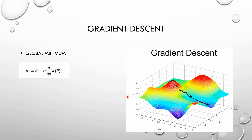The gradient descent algorithm is an iterative algorithm to find a global minimum of an objective function. This algorithm is widely used in machine learning for minimization of functions. In this algorithm we calculate the derivative of the cost function in every iteration and update the values of parameters simultaneously using this formula. The objective of this algorithm is to find this global minimum, as you can see in this graph.